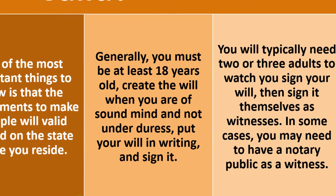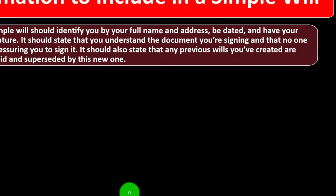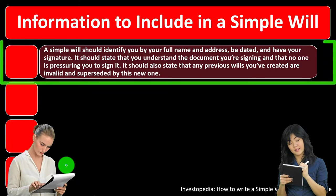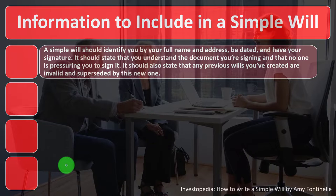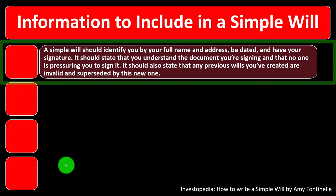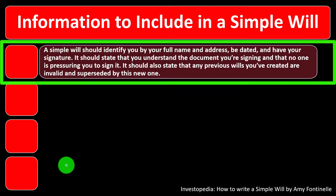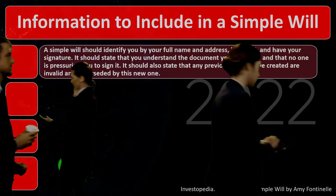The will must be put in writing and signed. You will typically need two or three adults to watch you sign your will, then sign it themselves as witnesses. In some cases you may need a notary public as a witness to verify the signature process. The will should identify you by your full name and address, be dated, and carry your signature. It should also state that you understand the document you're signing and that no one is pressuring you to sign it.